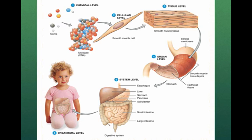Several smooth muscle cells combine to form smooth muscle tissue. The smooth muscle tissue combines with other tissues, such as epithelial tissue and a serous membrane, to form an organ called the stomach. The stomach works in combination with the liver, the gallbladder, the pancreas, and the small and large intestine to form the digestive system. The digestive system is just one of the 11 organ systems that make up the human body at the organism level.